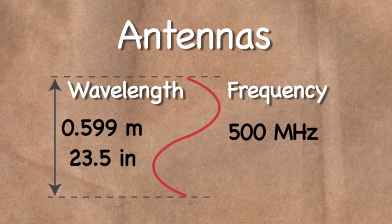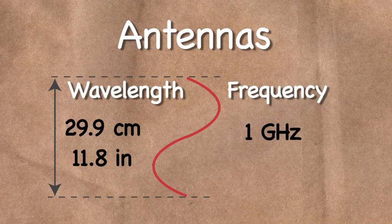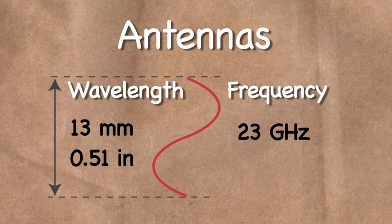For example, an RF signal with a frequency of 23 GHz has a wavelength of just 13 millimeters, or just over half an inch.